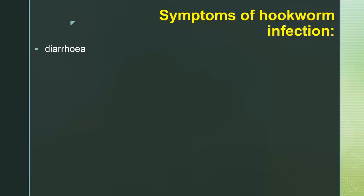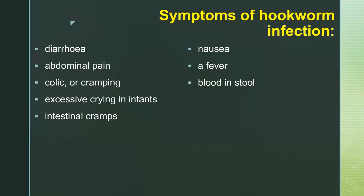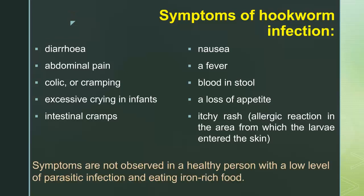Symptoms of hookworm infection include diarrhea, abdominal pain, colic or cramping, excessive crying in infants, intestinal cramps, nausea, fever, blood in stool, loss of appetite, itchy rash, and allergic reaction in the area from which the larvae entered the skin. Symptoms are not observed in a healthy person with a low level of parasitic infection and eating iron-rich food.